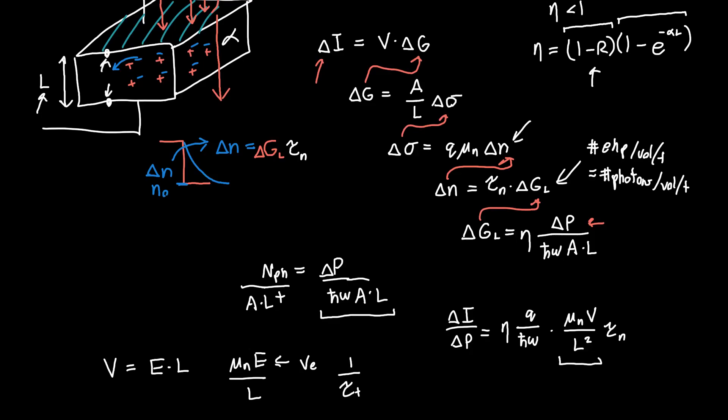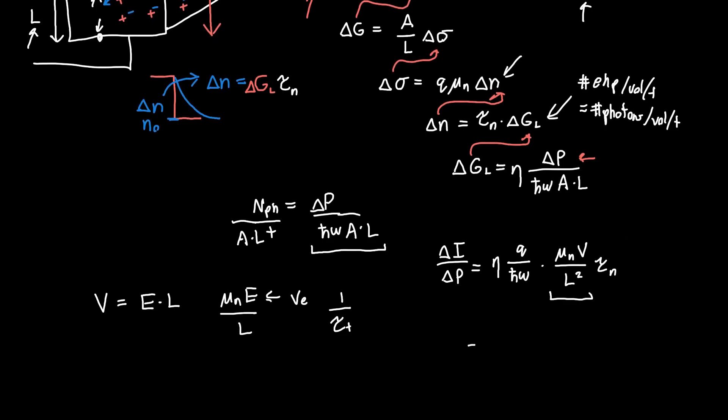If we do that, then we have a new transfer function. We've still got this eta Q over h-bar omega out front, but now we've got this term tau_n over tau_t, and this is what's known as the photoconductive gain.